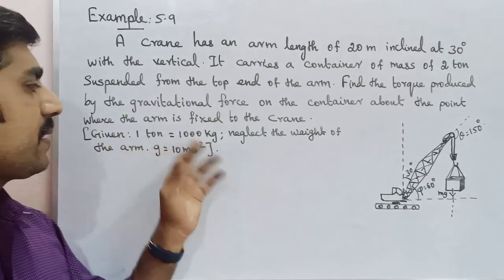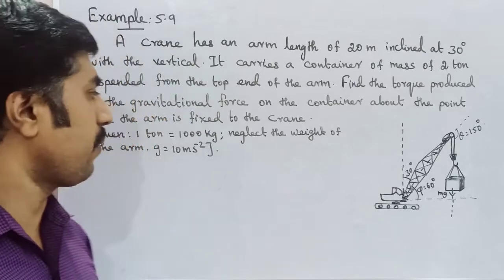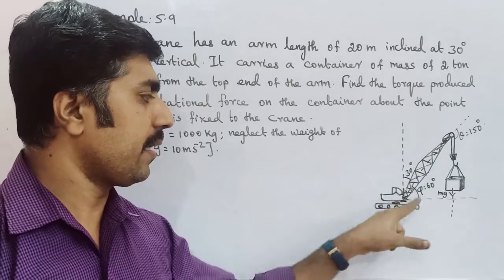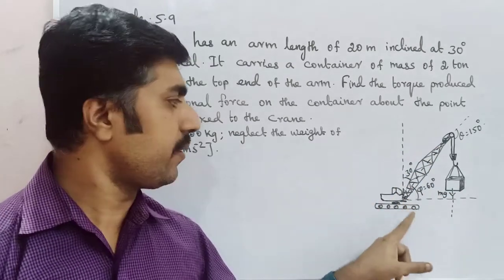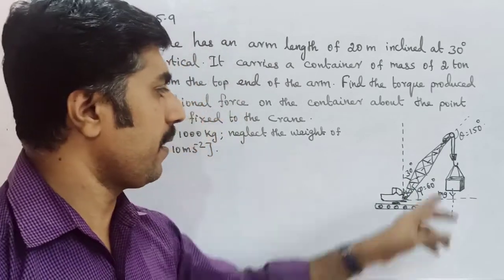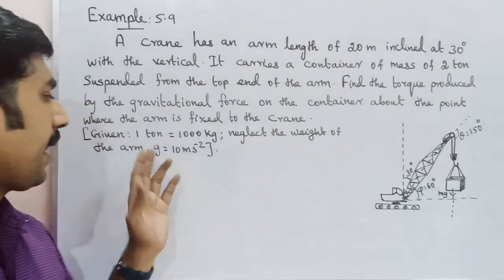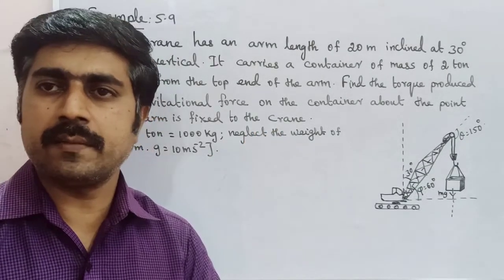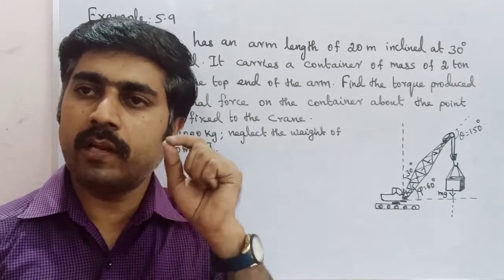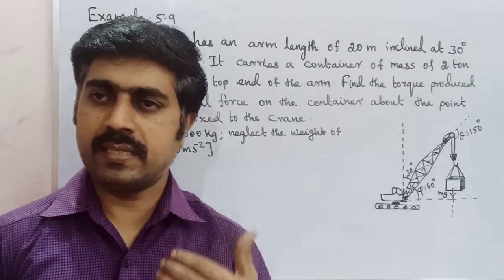Given: 1 ton is equal to 1000 kg. So 2 tons is 2000 kg. Neglect the weight of the arm. Acceleration due to gravity, exact value is 9.8, but we will round it. So this is the setup we have to calculate.